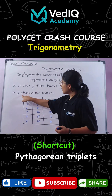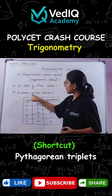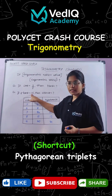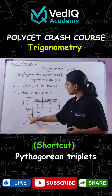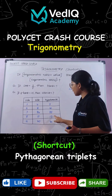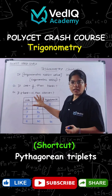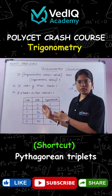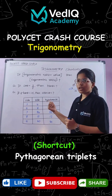In this case, 8 tan theta is equal to 15, so tan theta is equal to 15 by 8. Here, 15 is the opposite side and 8 is the adjacent side. This gives us the hypotenuse no matter what. These are the values you can easily use to crack this.